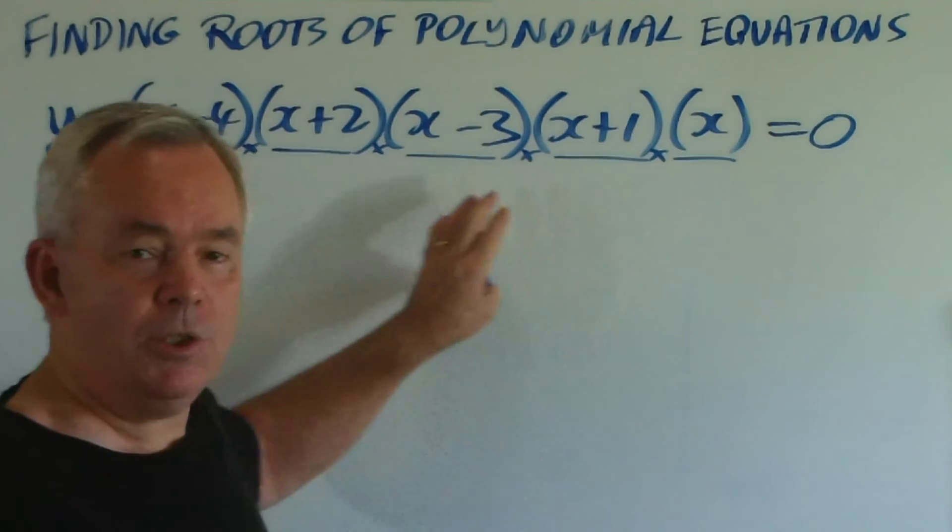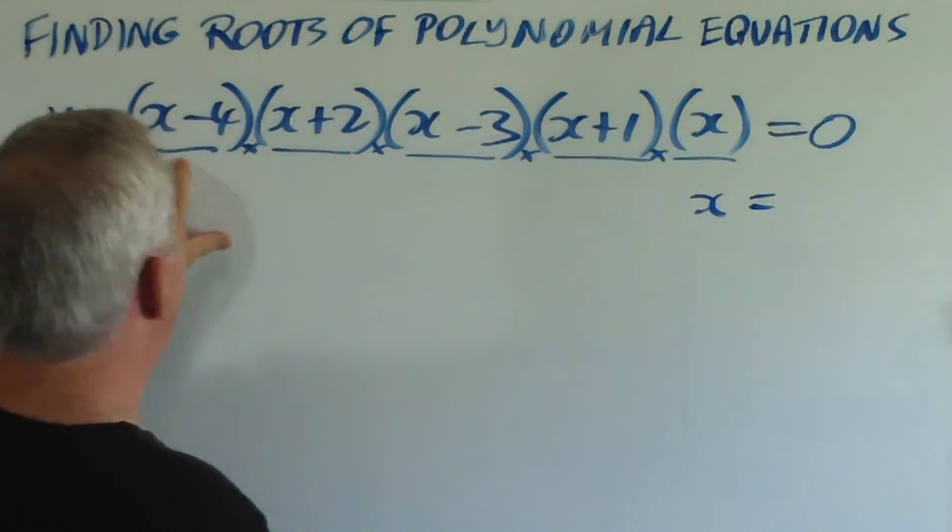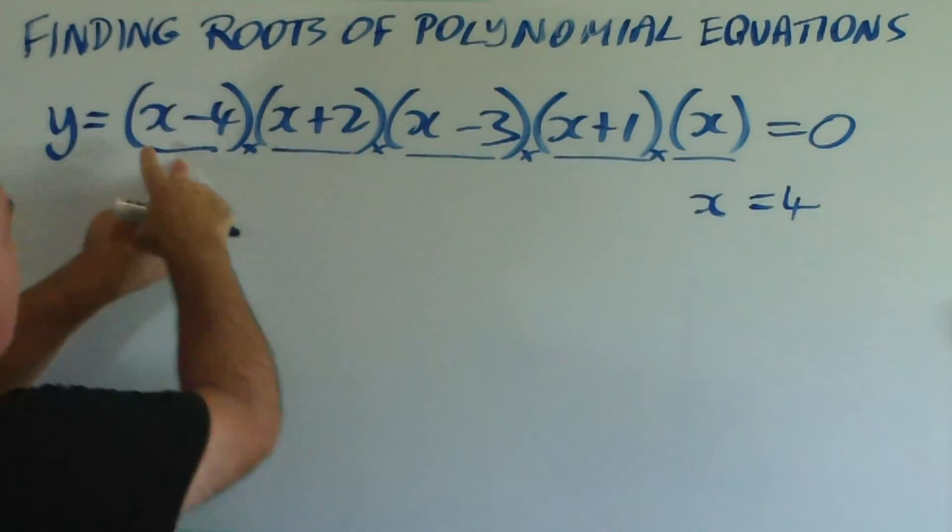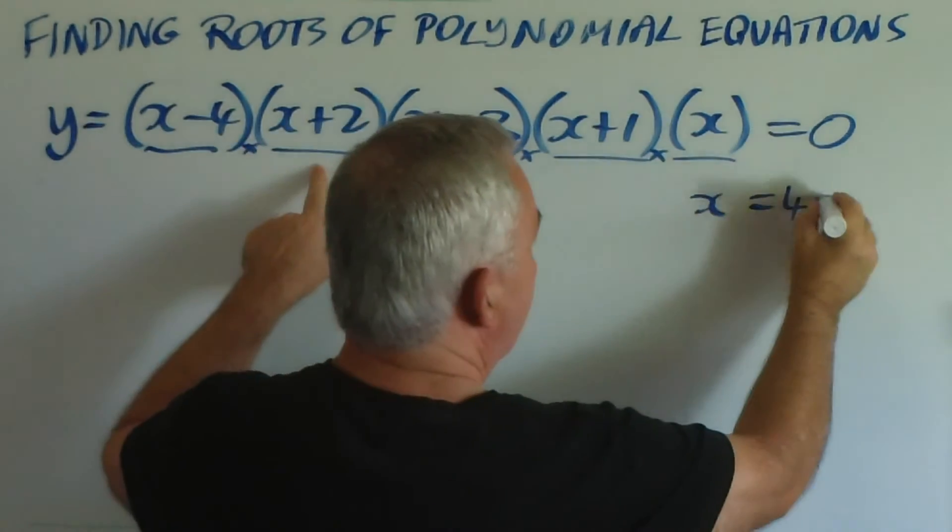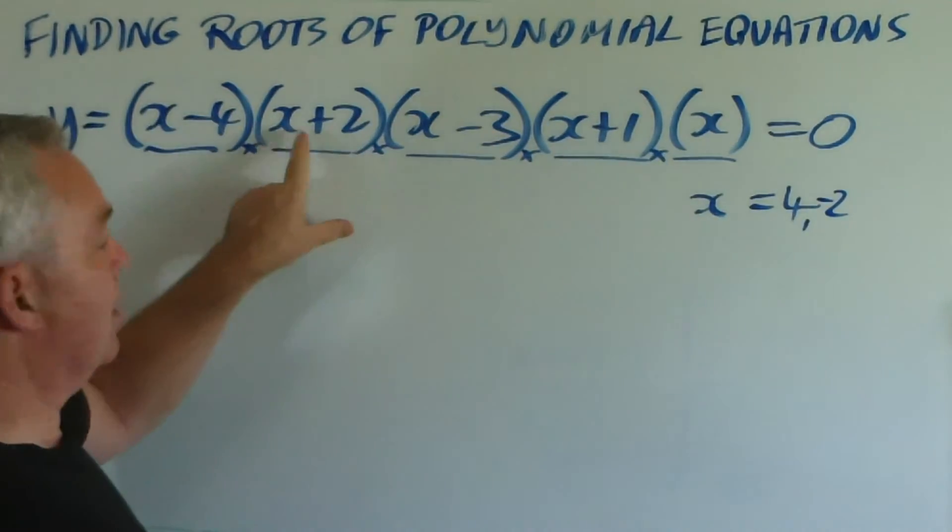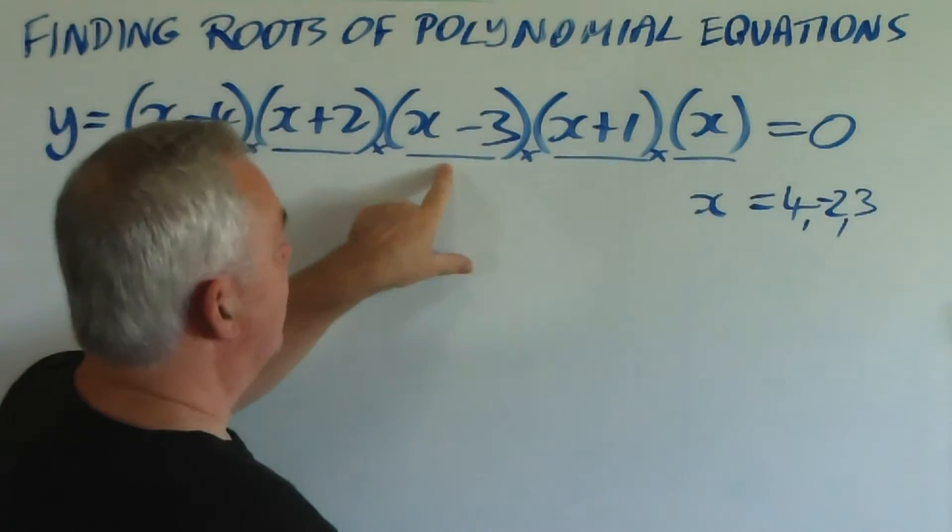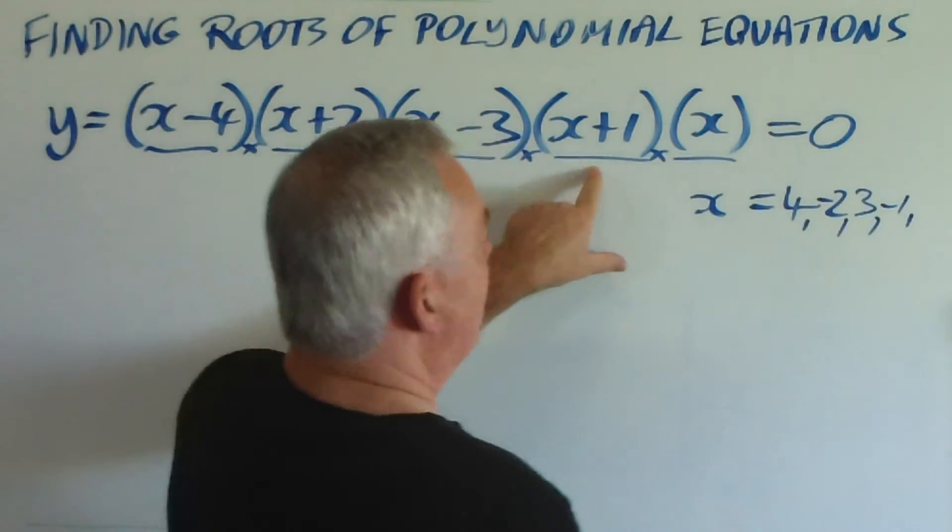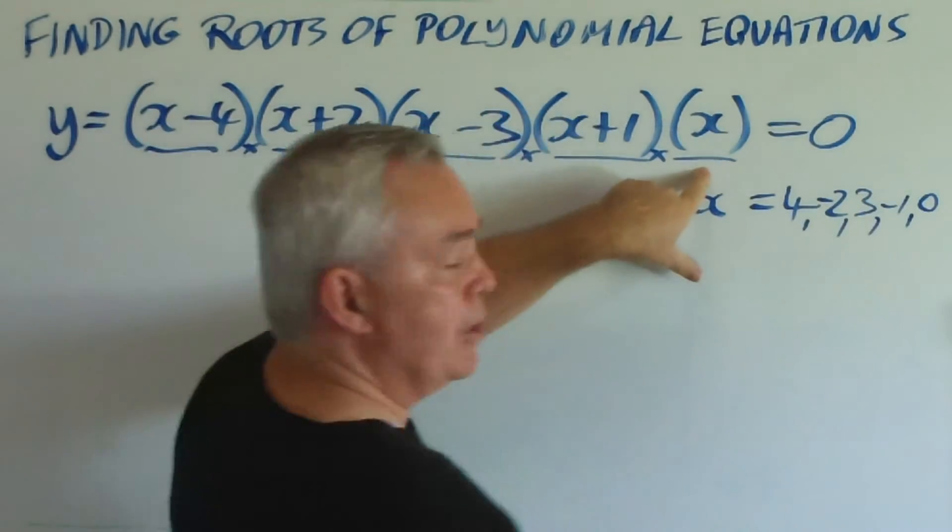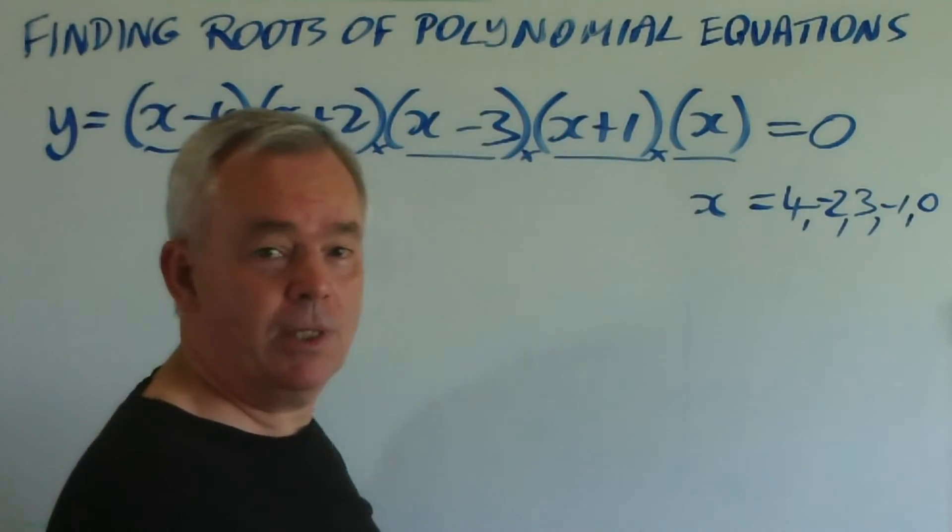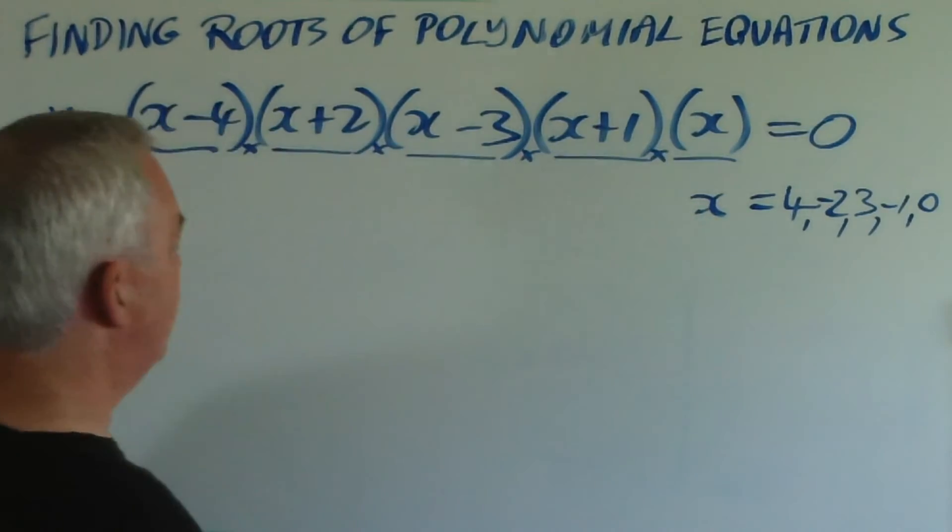And then we work along the equation, along the polynomial, looking at each term and finding the relevant root. Here, x could be equal to four, because four minus four makes zero. It could be equal to negative two, because negative two plus two makes zero. Or here, three, negative one, and in the case of this term where x is by itself, x just has to equal zero in its own right, because that makes x equal zero. So, here we have five roots for this equation.